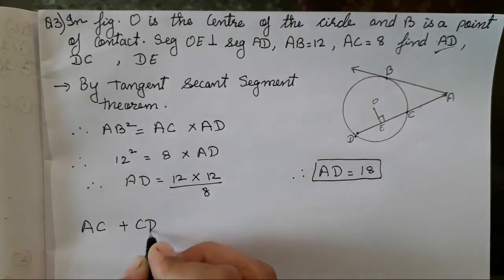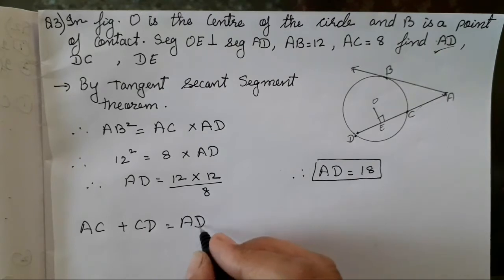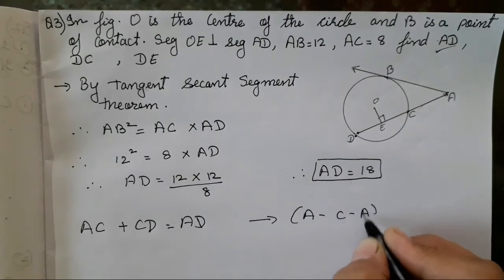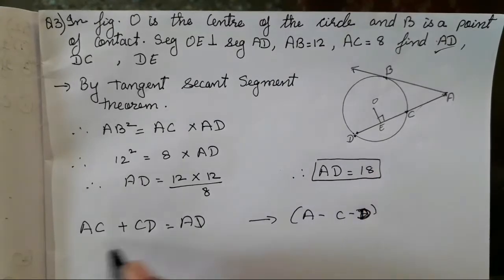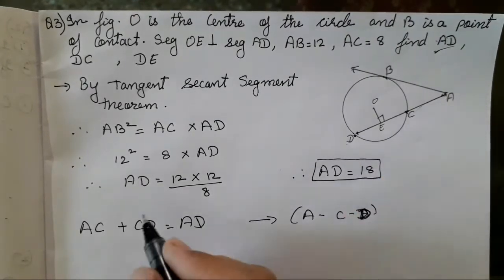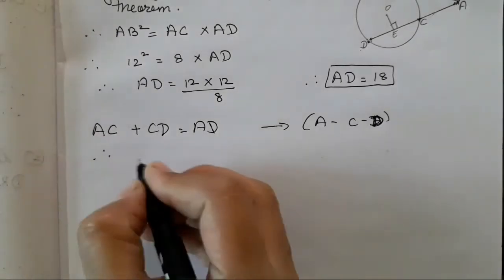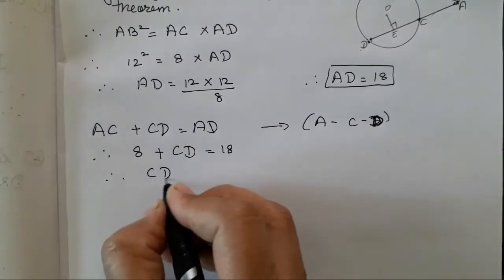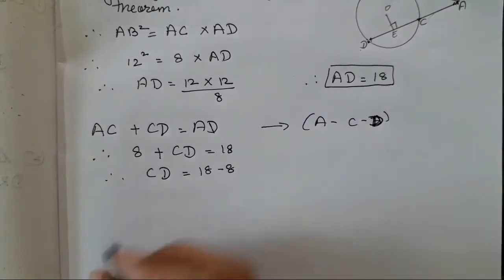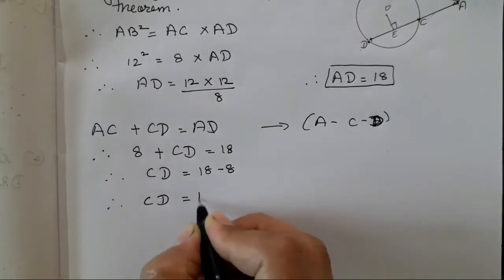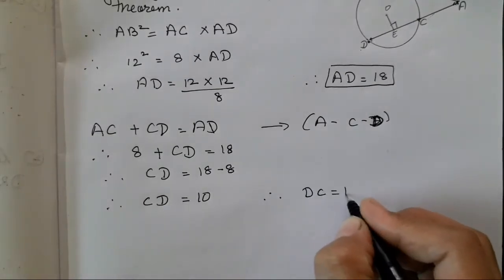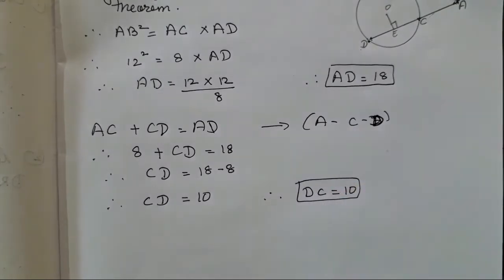Now, AC + CD = AD, because C is between A and D. Substituting the values: CD = 18 − 8. Therefore CD, or DC, is equal to 10. That is the second answer.